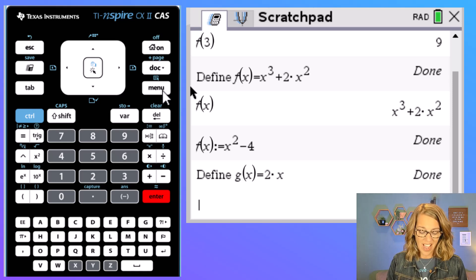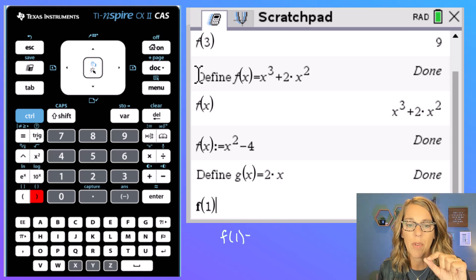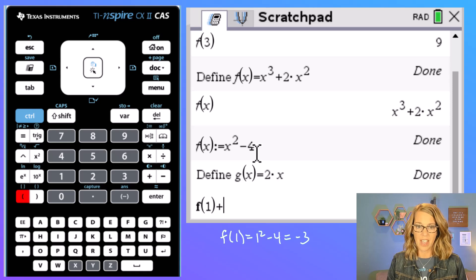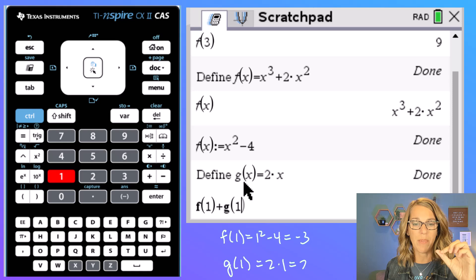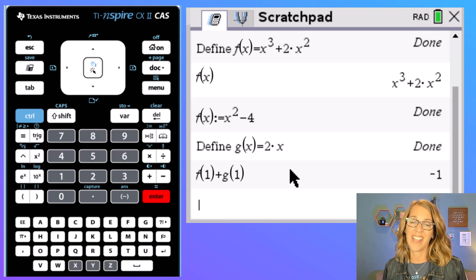For example, I could do f of 1. What would f of 1 be? That would be 1 squared minus 4. That would be negative 3 plus g of 1 and g of 1 would be 2. So that would be negative 3 plus 2. I should get a negative 1 and sure enough I get a negative 1.